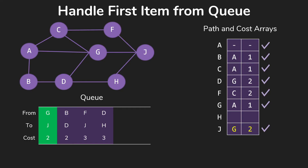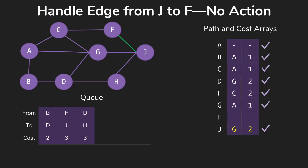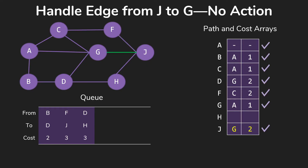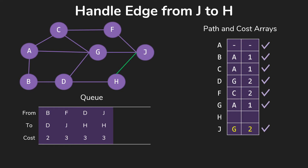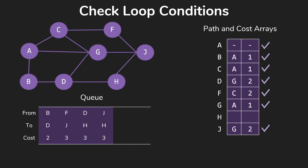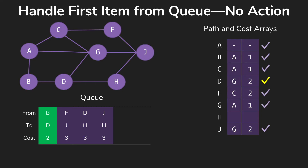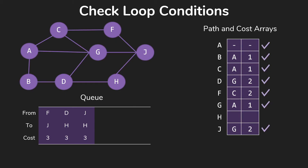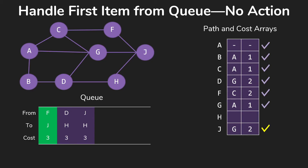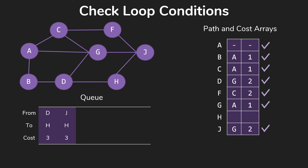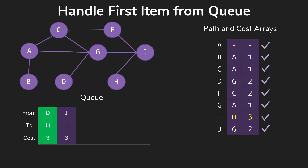Next, J is new for us so we update our arrays. The edge from J to F — we've already got F, so we do nothing. Already have G, so we do nothing. We don't have H yet from this path, so we do add that to our queue. Then B to D comes up — we already have D, so we don't do anything, just toss that. Still going: we pull the next one off, and again we already have J. We know what we already have is at least as good as what's on the queue, so we throw that away.